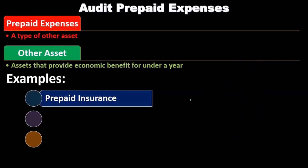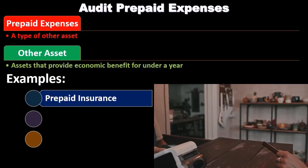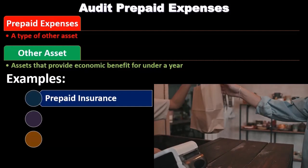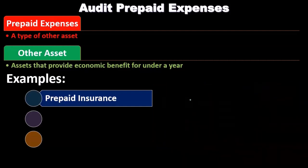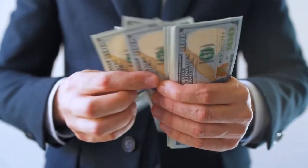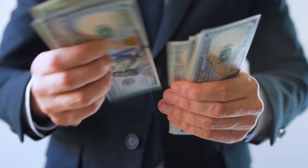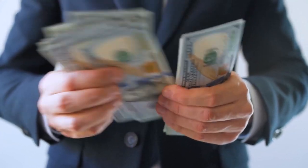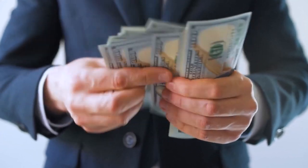We can have prepaid types of items where we pay for the item before we actually receive it. This is a little unusual because typically you would think we would pay for the item at the point in time we receive it — whether goods or services — or possibly after. In this case, we're paying before we receive the goods or services, typically being prepaid insurance.